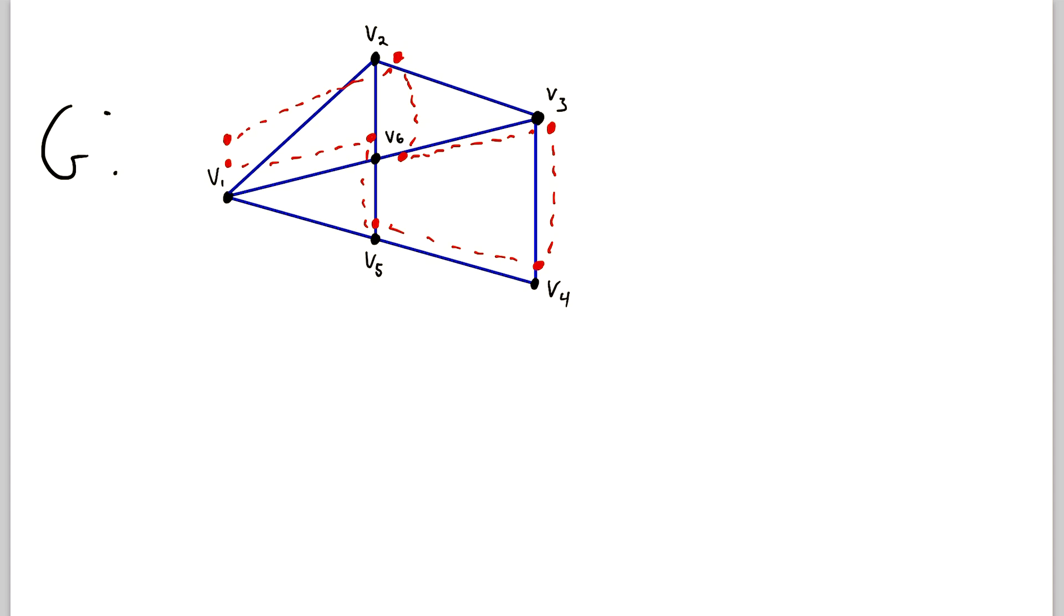Then what we have just described is a circuit in the graph G. And it is also a trail. So what makes this a circuit? What makes it a trail? Well, let's name and describe it.